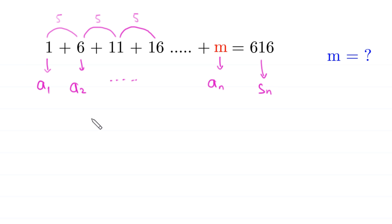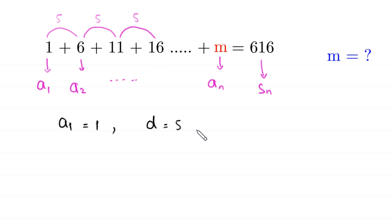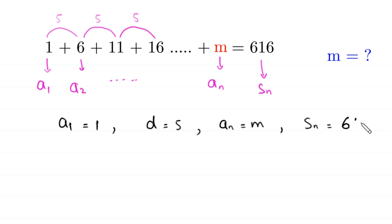We have the value of the first term A sub 1 equal to 1, common difference D equal to 5, last term A sub n equal to m, and sum S sub n equal to 616. To find the value of m, we will use two formulas.